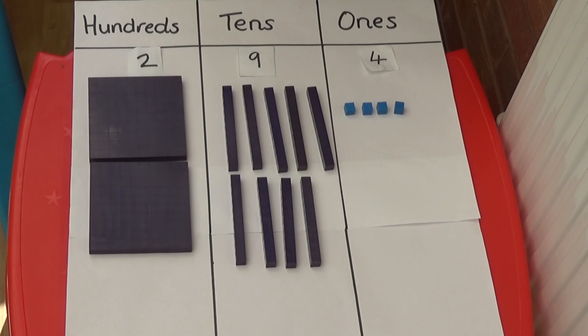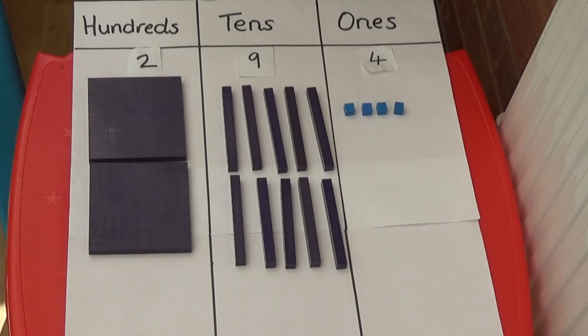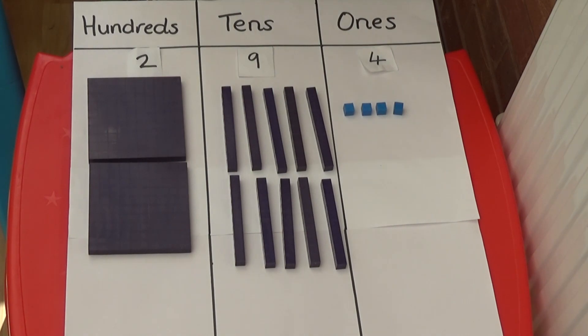My number here is 294. If I add a tens rod to the tens column, I would have 10 tens. We can't have 10 tens, so I need to exchange them for a 100 square and put it in the hundreds column.